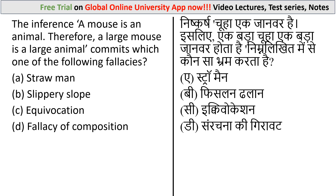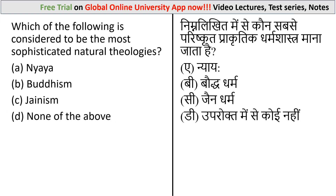Question: The inference 'A mouse is an animal, therefore a large mouse is a large animal' commits which of the following fallacies? Options: Straw man — an informal fallacy of having the impression of refuting an argument; Slippery slope — the fallacy of arguing that a certain course of action is undesirable; Equivocation — an informal fallacy resulting from the use of a particular word in multiple senses within an argument; and Fallacy of composition — an informal fallacy that arises when one infers that something is true of the whole from the fact that it is true of some part. The correct answer is option C: Equivocation.